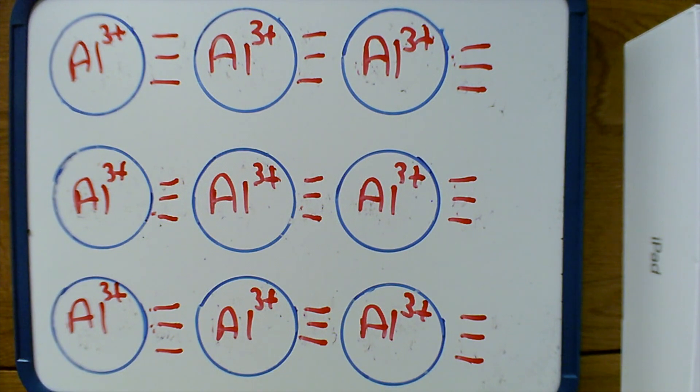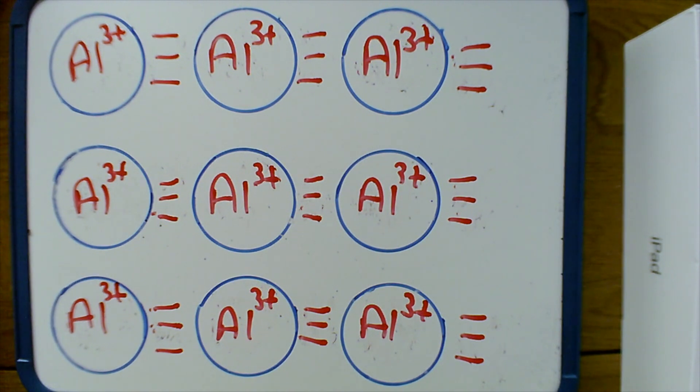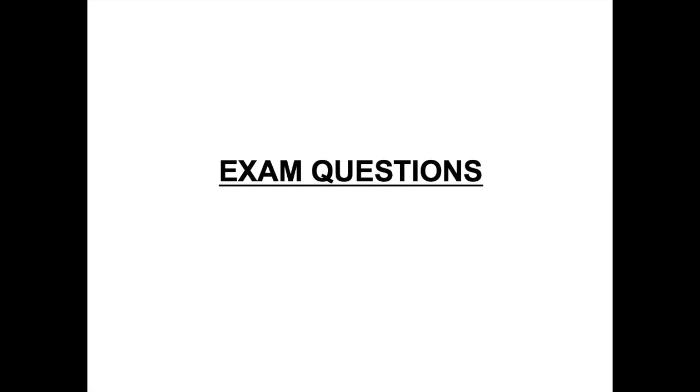Aluminium is also very malleable, and metals tend to be malleable because the ions can slide over each other. Now let's test our understanding of metallic bonding by looking at some exam questions. In these exam questions, you're going to have to use the metallic bonding model to explain some of the properties of typical metals and also why these metals have certain uses.